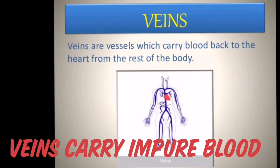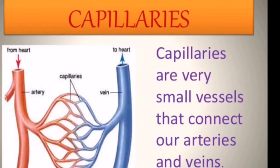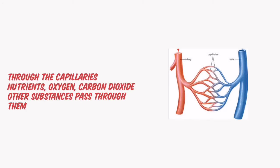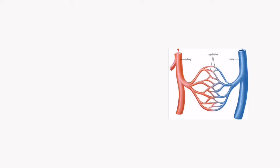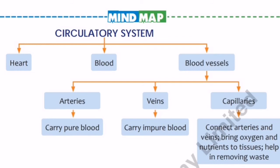And next, capillaries. These are very thin-walled, narrow tubes forming a network. Through the thin walls of the capillaries, nutrients, oxygen, carbon dioxide and other waste materials pass through. In total, the circulatory system circulates the blood along with oxygen, nutrients and other necessary substances.